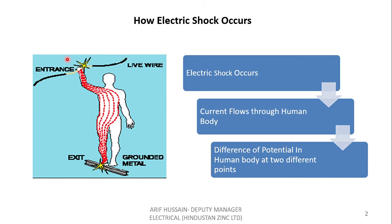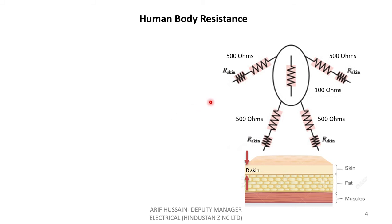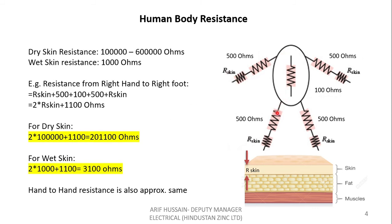The current enters at the hand and exits at the foot, so the total resistance faced by the current is: 2 times R_skin plus 500 plus 100, which equals 2 times R_skin plus 1100 ohms. For dry skin, taking the minimum value of 1 lakh ohms, this comes out to approximately 2,01,100 ohms. However, for wet skin where R_skin is around 1000 ohms, the resistance faced by the current would be 2 times 1000 plus 1100, which is around 3100 ohms.